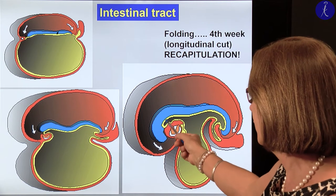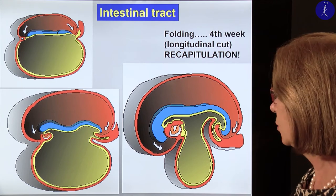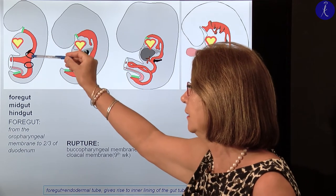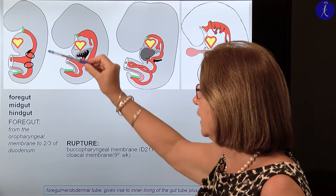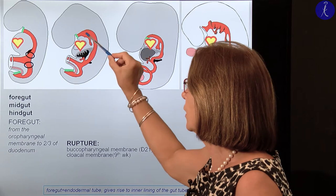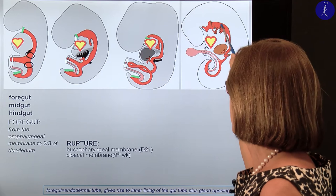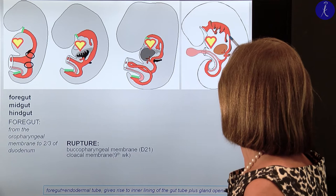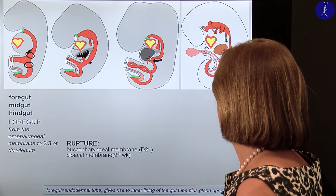Now we have this rudimentary endodermal gut tube with a foregut, midgut, and hindgut. The foregut is closed anteriorly by the oropharyngeal membrane. From the foregut we will have several segments of the intestinal tract: this upper part is the pharyngeal gut, then comes the esophagus and the stomach, and the foregut ends at two-thirds of the duodenum.